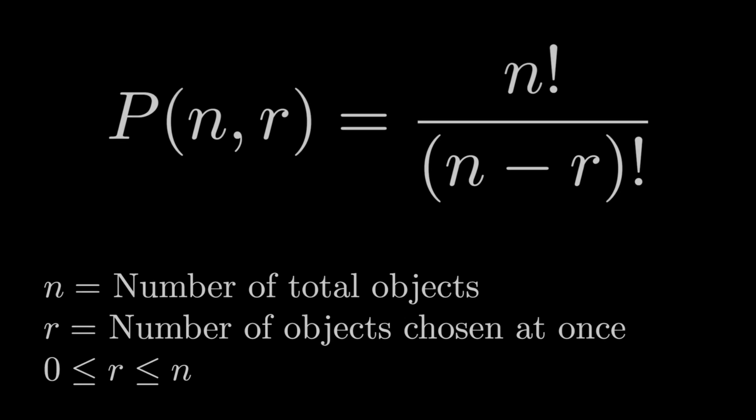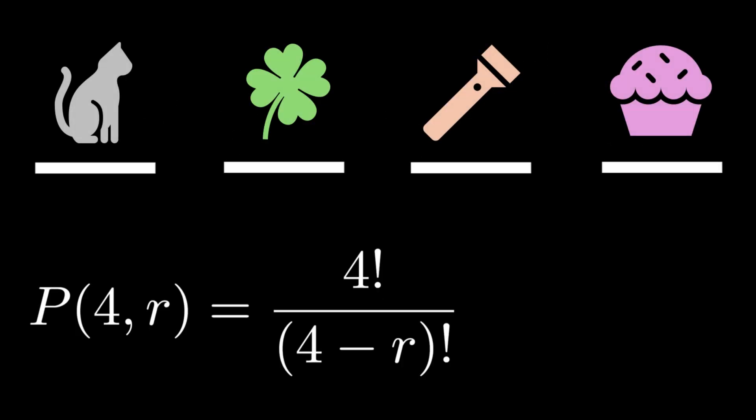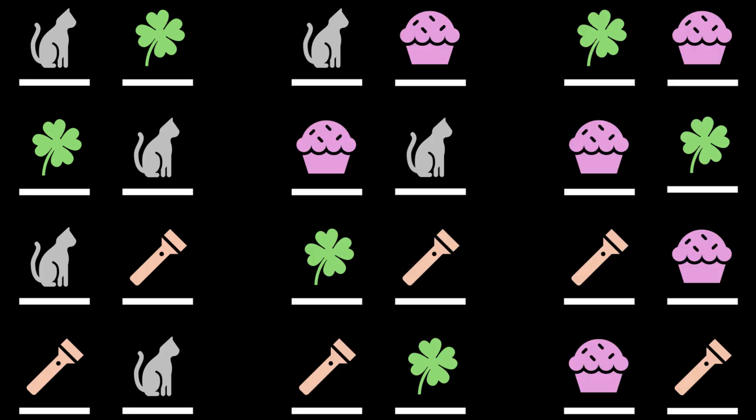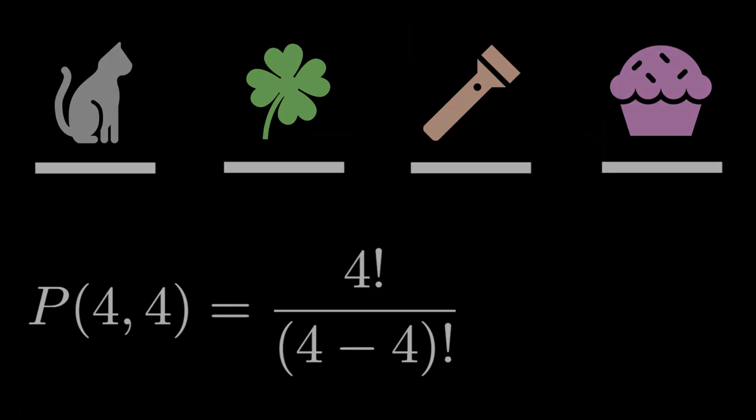The permutation function calculates how many ways we can arrange r objects from a set of n distinct objects where the order matters. Say we have four objects. If we want to permute two at a time, then there are 12 ways to do so. But what if we want to permute all four objects? Setting zero factorial equal to one gives us a total of 24 ways to do so.